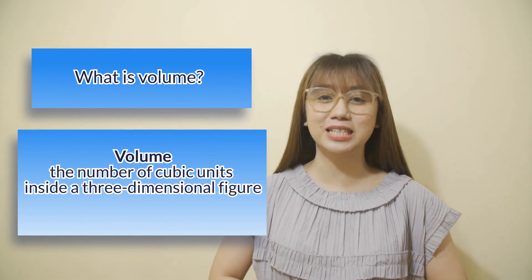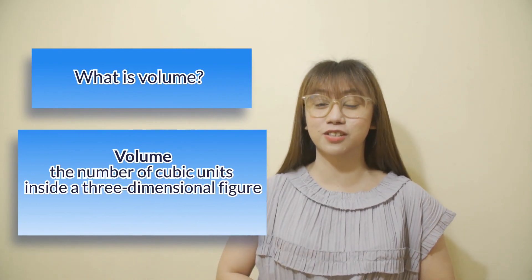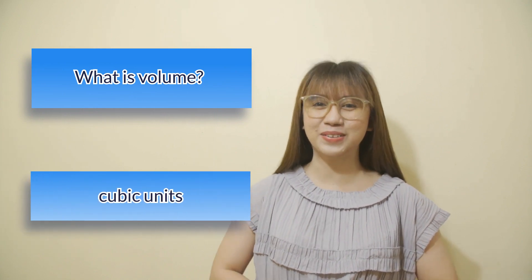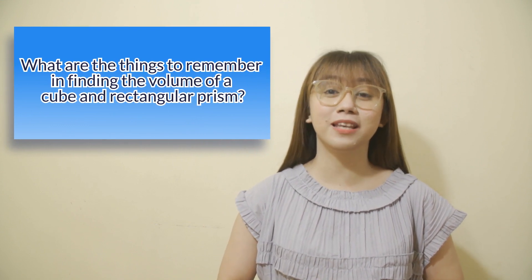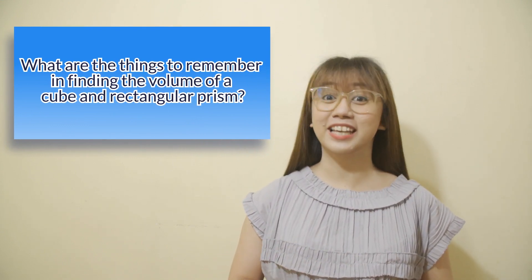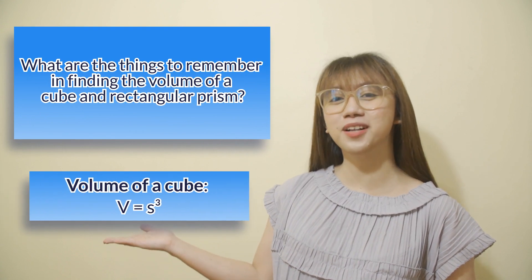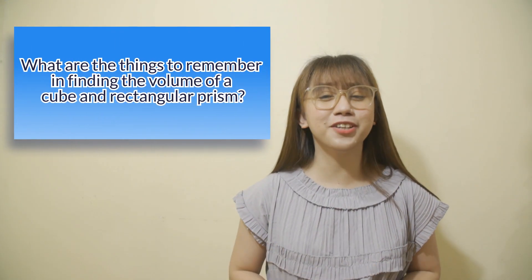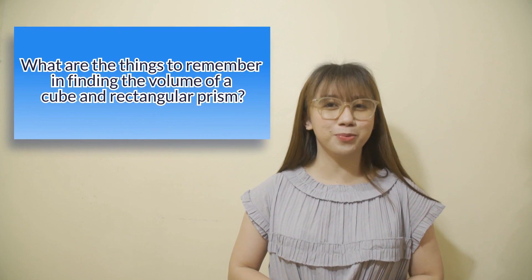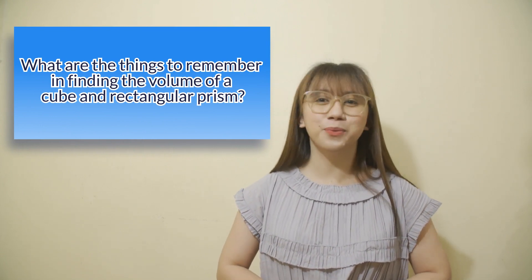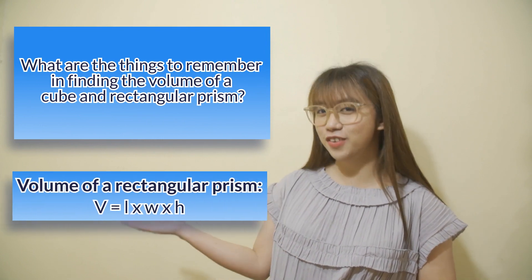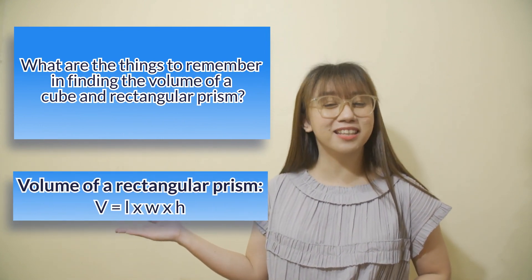You did great, kids! Now let's go back to our two questions. Volume is the number of cubic units inside a three-dimensional figure; it is measured in cubic units. To determine the volume of a cube, we simply multiply the side three times — that is, V equals S cubed. Meanwhile, to determine the volume of a rectangular prism, we simply multiply the length, width, and height — that is, V equals length times width times height.